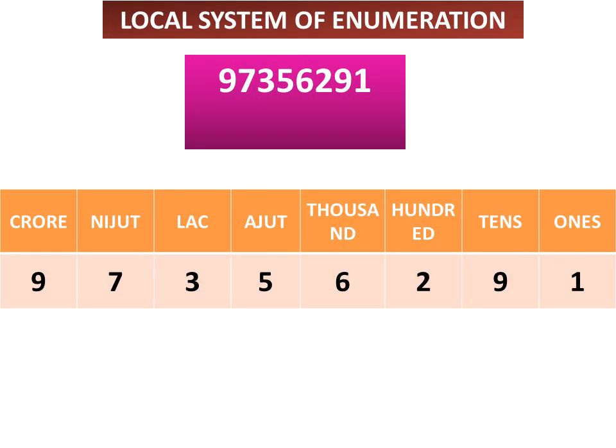Now I am going to tell you about the local system of enumeration. The local system of enumeration is the number system used locally. For example, let us take the number 97,356,291. In the local system of enumeration, this number is written as 9,73,56,291.